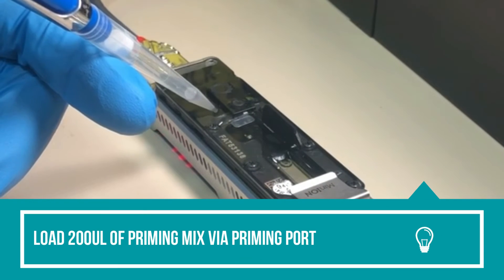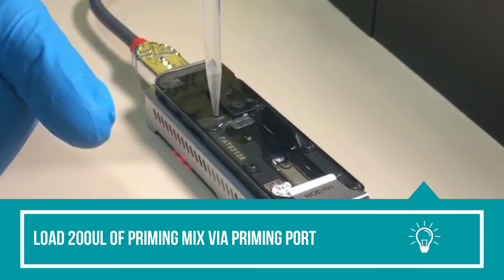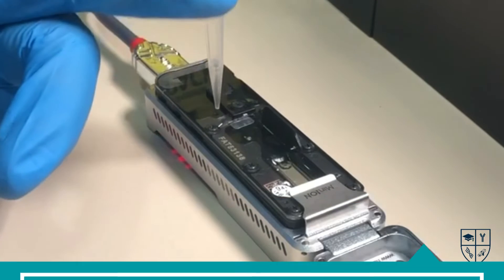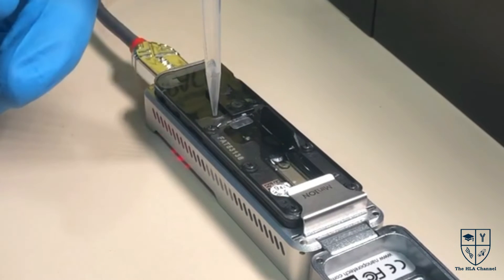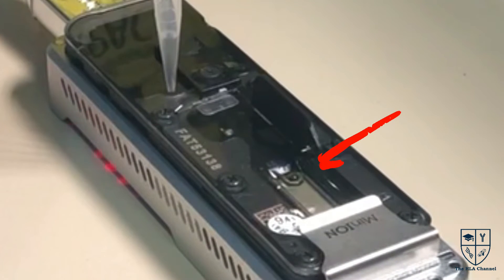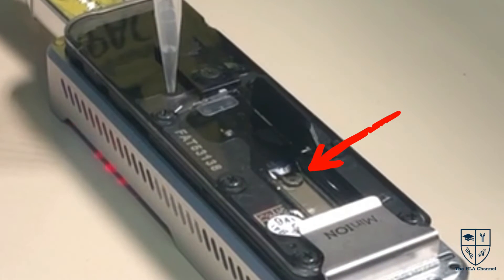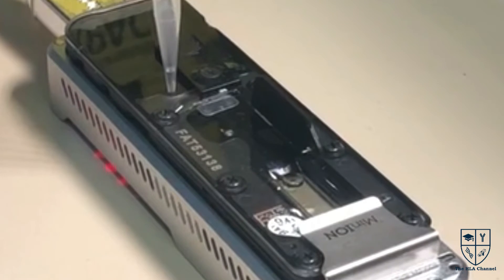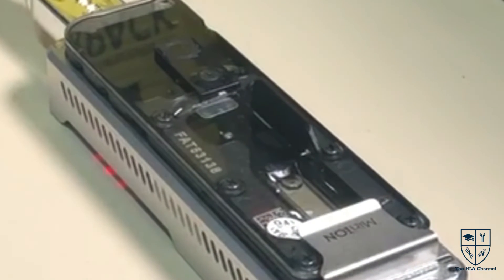Load 200 microliters of the priming mix into the flow cell via the priming port. Pay attention, not the spot-on sample port, avoiding the introduction of air bubbles. You should observe the liquid overflowing through the spot-on port. Here again, you can use inverse pipetting, but do not forget to leave a small volume in the tip.